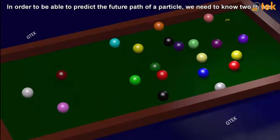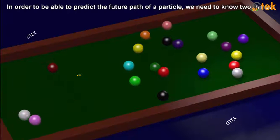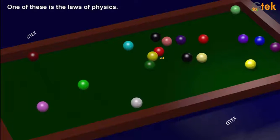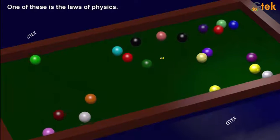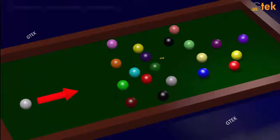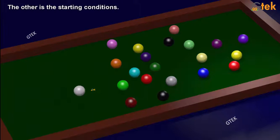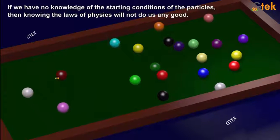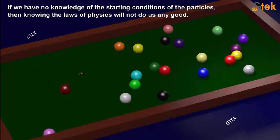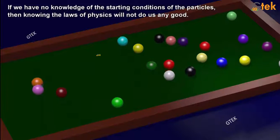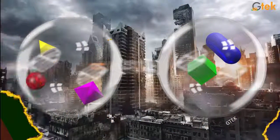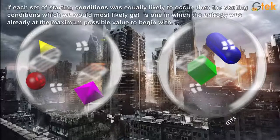In order to be able to predict the future path of a particle, we need to know two things. One of these is the law of physics. The other is the starting condition. If we have no knowledge of the starting condition of the particle, then knowing the law of physics will not do us any good. It won't give any information. Considering a ball is there, if it hits some other direction, you can't find it.